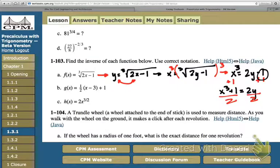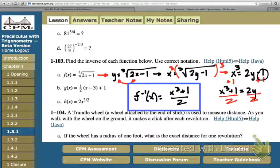And our final answer, we'll write it this way. F inverse of x is equal to x cubed plus 1 divided by 2. And that whole thing is over 2.